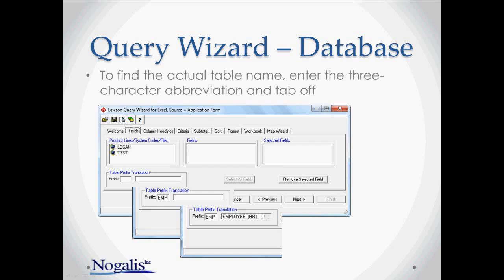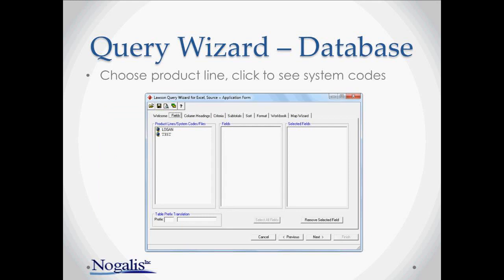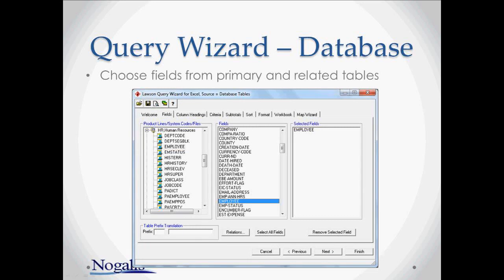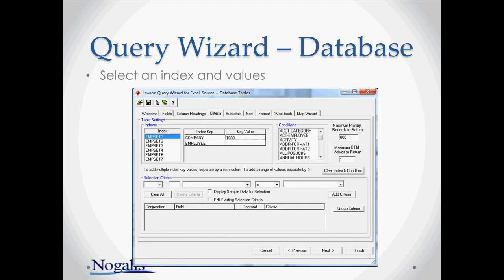Now that we know the table, we can click through the wizard beginning with the product line. Select your product line — in this case it will be test. That will give you a list of system codes with tables. The employee table is within the HR system code. If I select that employee table, I'll see the fields for the table on the right side. You can click the fields one by one and add them to the right side, or you can select all or select multiple at once. You can also bring fields over from related tables by clicking on the relation button.